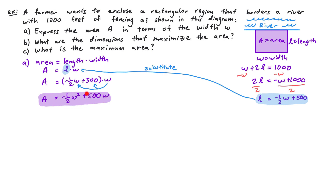If we were to graph this equation, we would have a W and A axis instead of X and Y, because A takes the place of Y and W takes the place of X. The shape is an upside-down parabola because A is quadratic with a negative coefficient in front of W squared, indicating a vertical reflection. To find the maximum area, we need the highest point on the graph — the vertex. So let's find the vertex to answer parts B and C.